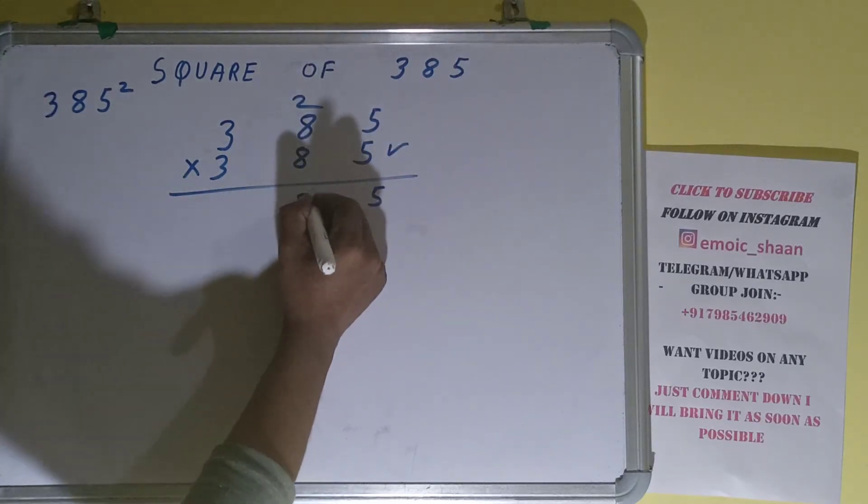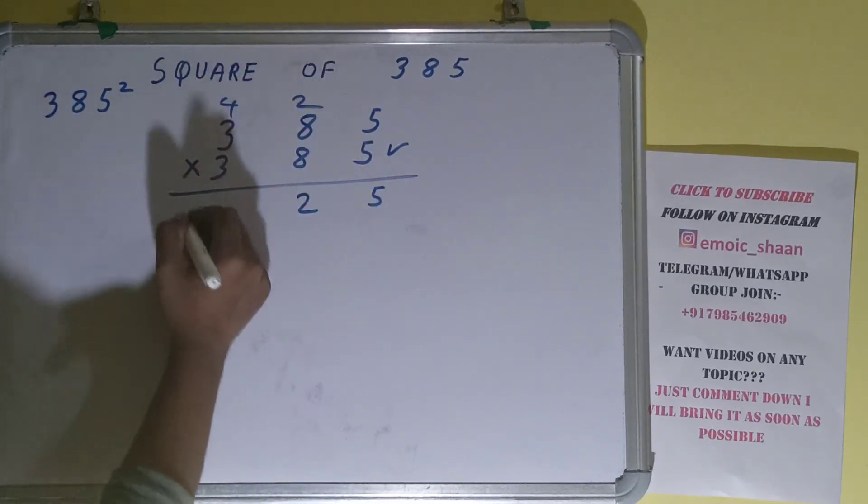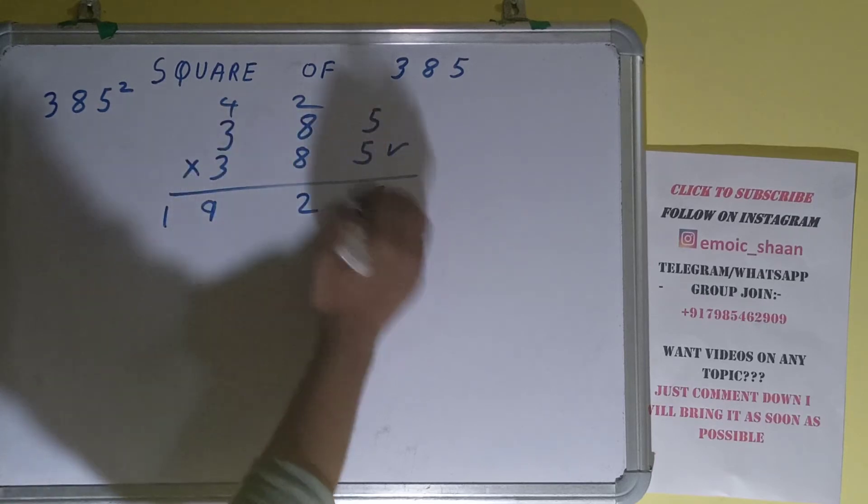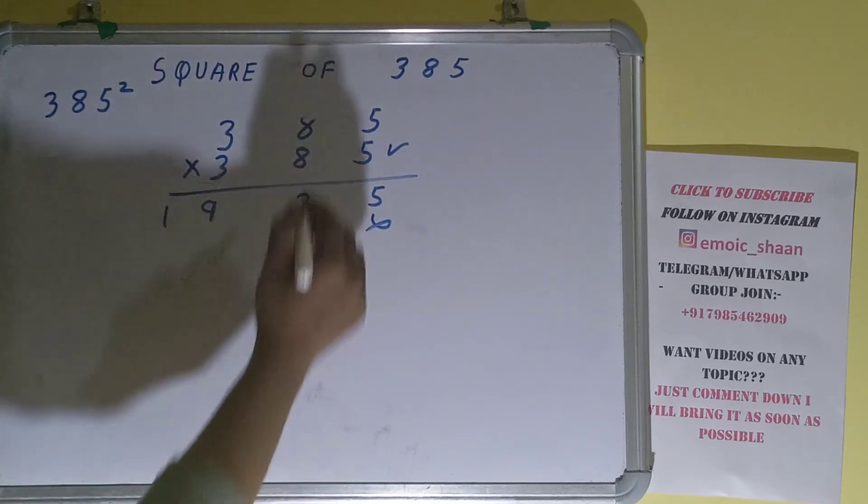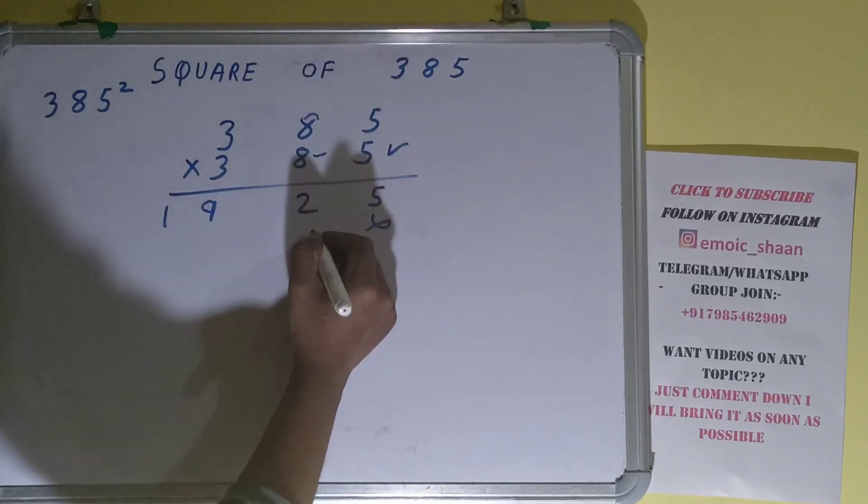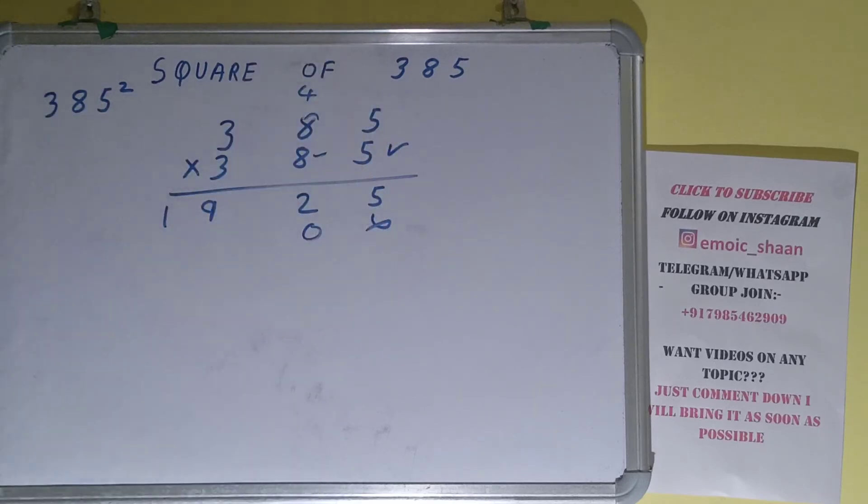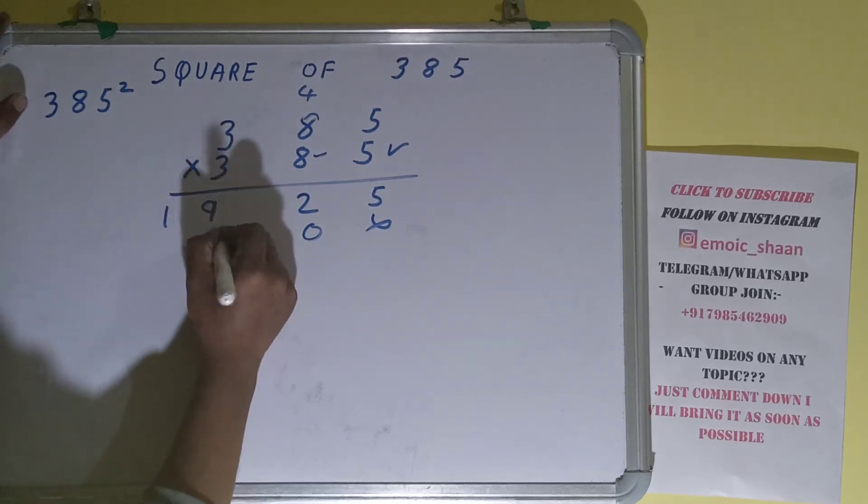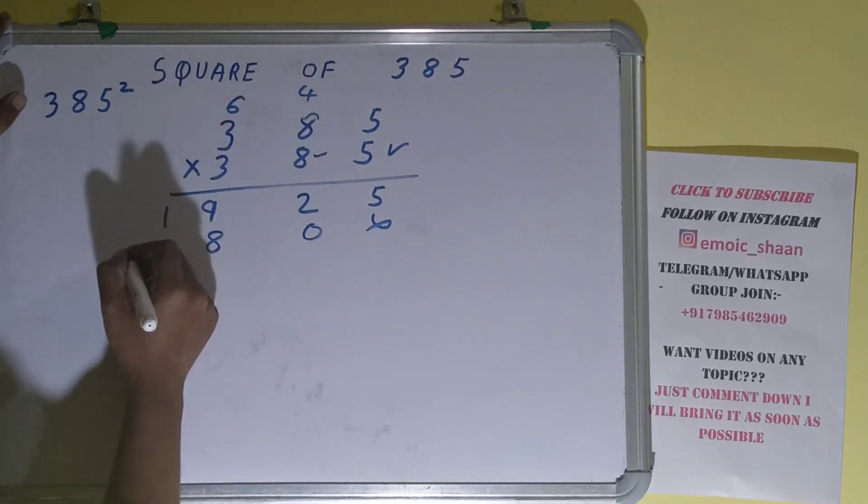4 carry. 5 times 3 is 15 plus 4 is 19. Now this 8: 8 times 5 is 40, 4 carry. 8 times 8 is 64 plus 4 is 68, 6 carry. 8 times 3 is 24 plus 6 is 30.